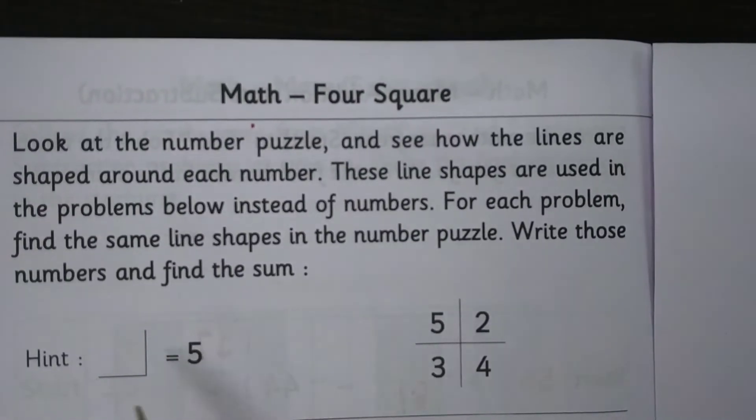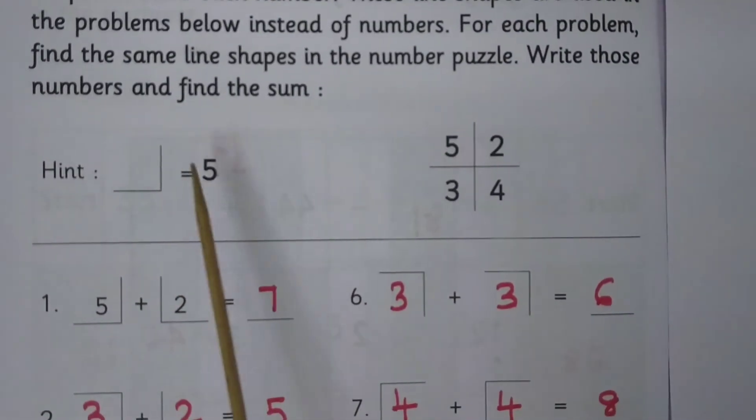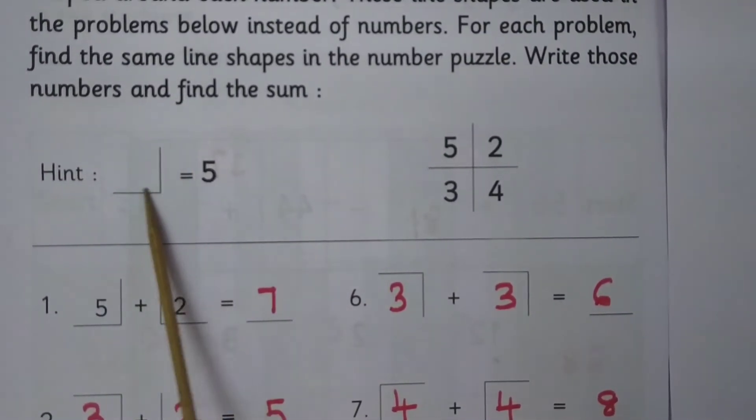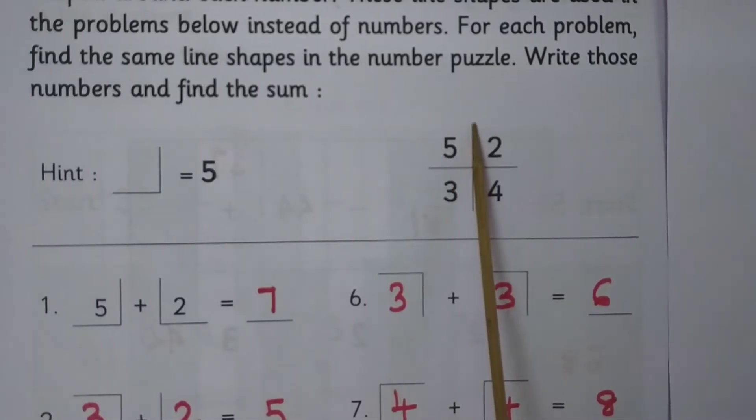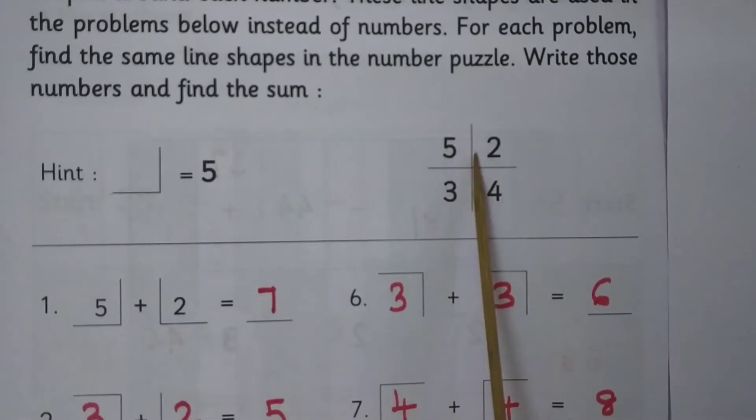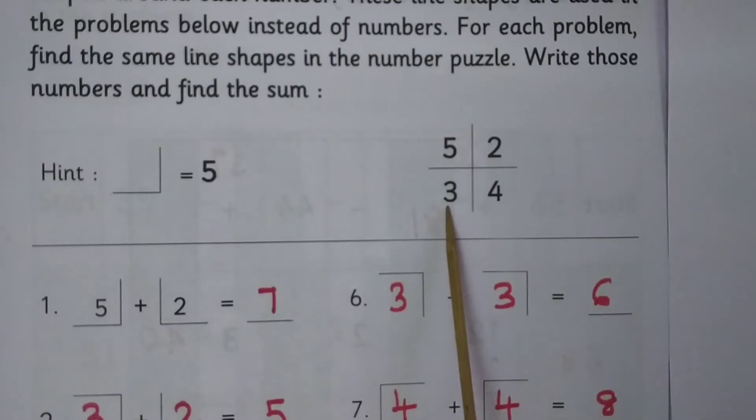Okay, here line shapes are there. If the line shape is like this, we have to think of it as 5. If the line shape is like this, it is 2. If it is like this, it is 3. If it is like this, it is 4.